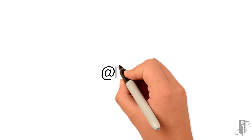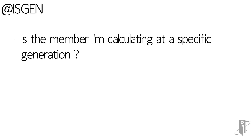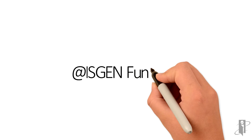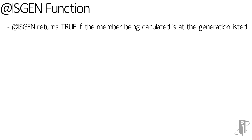The isGen function is used when you're determining if the member you're calculating is at a specific generation. Let's take a look at the isGen function syntax. IsGen returns true if the member being calculated is at the generation listed.